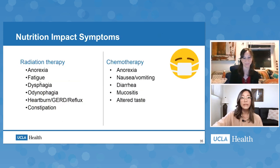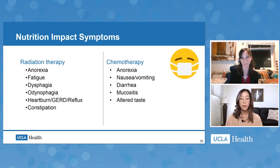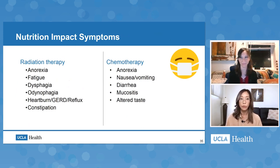The effects of chemotherapy and radiation, especially to the esophagus, can be astronomical. Nutrition impact symptoms are symptoms and complications of not only cancer but anti-cancer treatment or medical comorbidities that can really interfere with someone's appetite and ability to digest or eat food. Some common nutrition impact symptoms from radiation and chemotherapy to the esophagus are listed here.